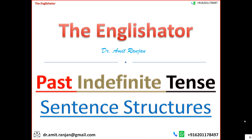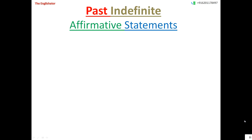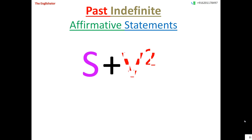I will first give you the formula for the affirmative statements in this tense. You take a subject first and with it you use the V2 form of a verb. For those of you who are not familiar with the term V2, I recommend you watch my video where I discuss in detail all five forms of verbs used to form different kinds of tenses — the link is in the description box below. So the basic formula for affirmative statements in the past indefinite tense is: Subject + V2.